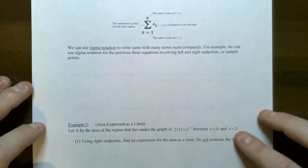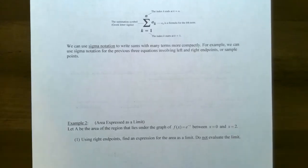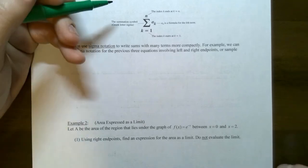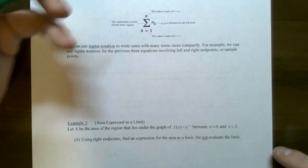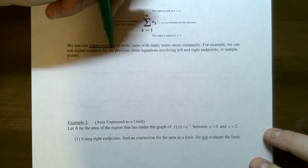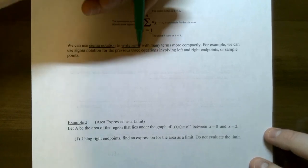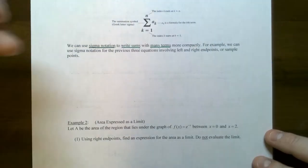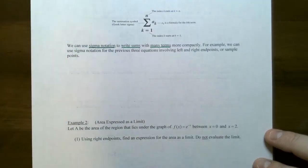Something very useful when we write out sums is sigma notation. You might have seen this from pre-calculus. Sigma notation is a convenient way to write sums where you have many terms, and we can use it to abbreviate the sums for the left endpoint and the right endpoint.